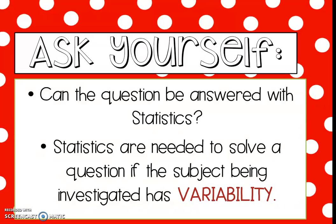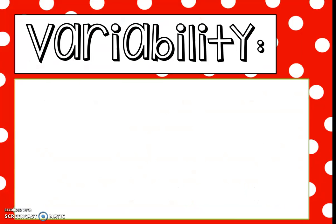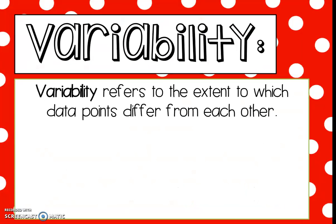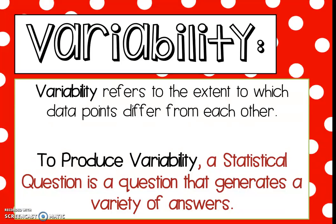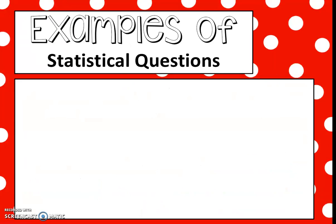If the question can be answered with statistics, we're going to get lots and lots of different answers. Veritability refers to the extent to which things differ. If a question produces veritability — lots of different answers or a variety of answers — then that question is statistical.